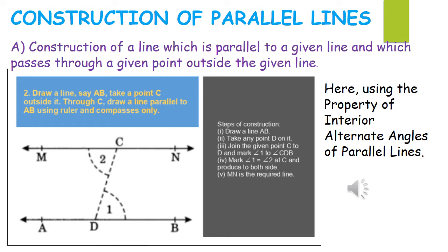Let us first learn the construction of parallel lines of the first type, where we are constructing a line parallel to a given line which passes through a given point outside the given line. In the first question we have to draw a line AB, take a point C outside it, and through point C draw another line MN which is parallel to line AB. We first draw line AB, take a point D on it, and take a separate point C outside AB, then join points C and D. This line CD is the transversal.